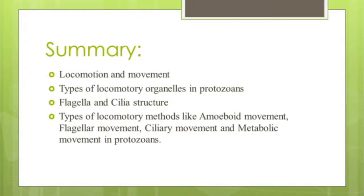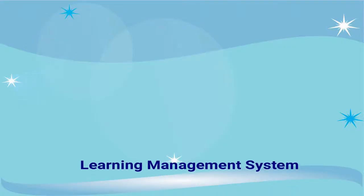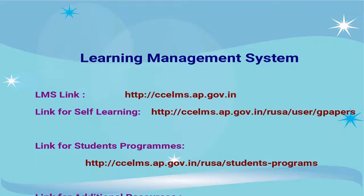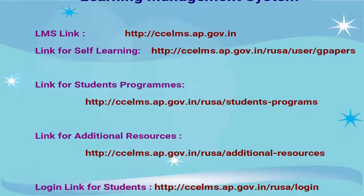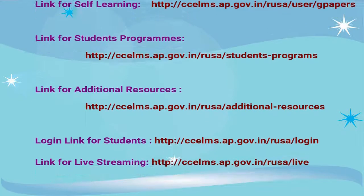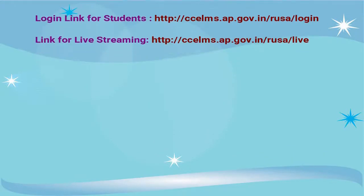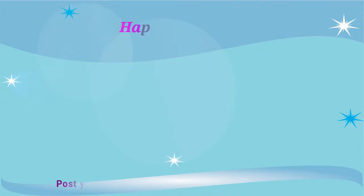Till now we have discussed locomotion and movement, the types of locomotory organelles in Protozoans and their structure — flagella and cilia in brief — and the types of locomotory methods in Protozoans: amoeboid movement, flagellar movement, ciliary movement, and metabolic movement. Thank you very much.